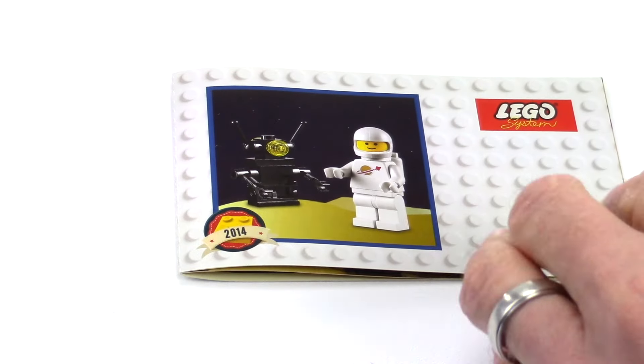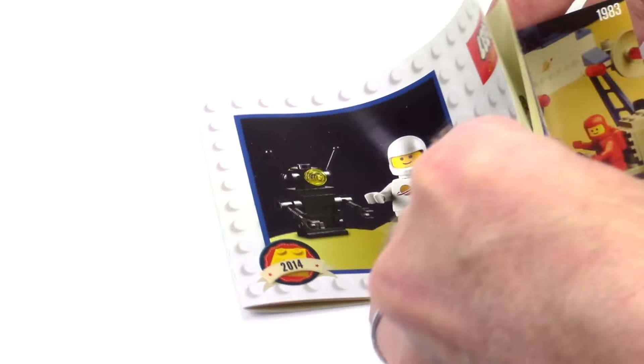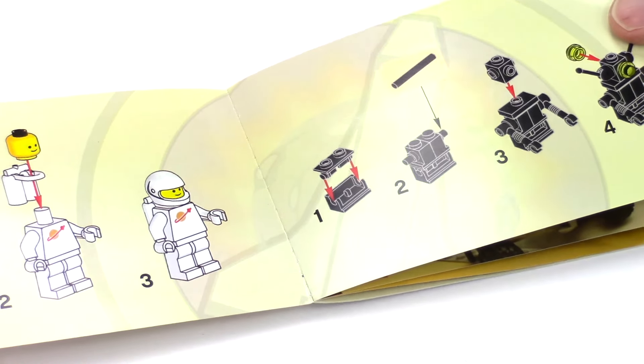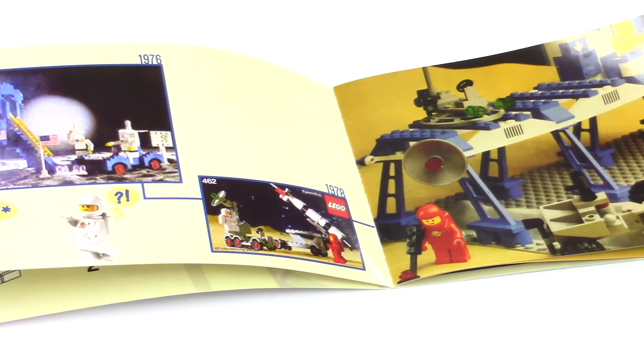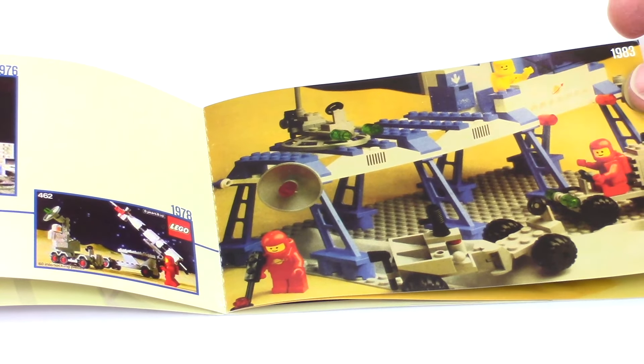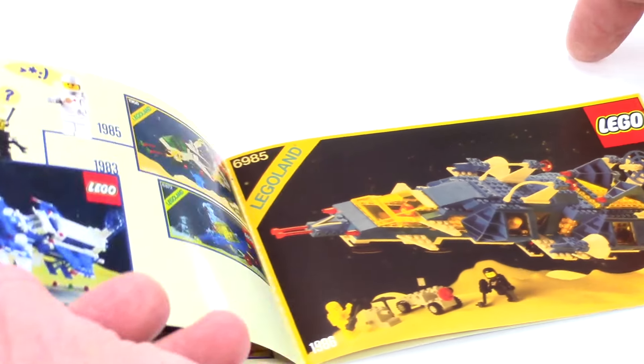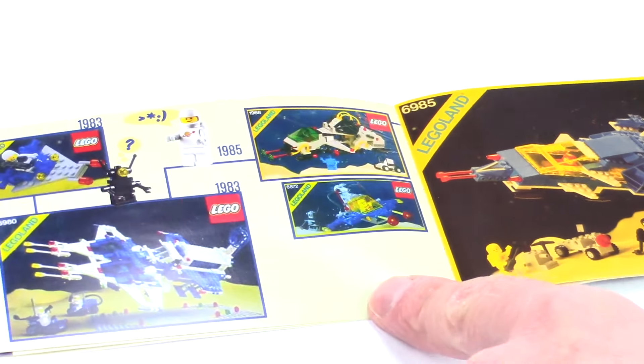It's cool, they gave you this little packet here. It's got some instructions on how to put that little droid together. But look at these, it's got some cool pages showing some of these Classic Space sets. This is really cool to include in 2014.